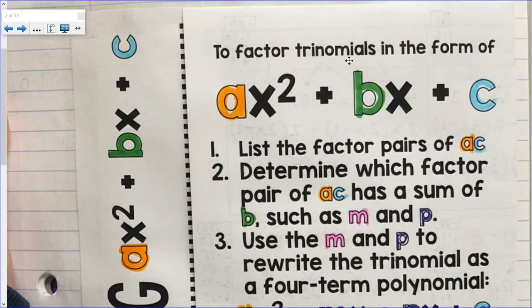I multiply a times c together, and I list those factor pairs. I think about all the numbers that multiply to get ac. I then figure out which one of those factor pairs somehow gets me a sum of b.